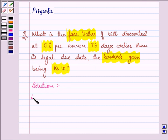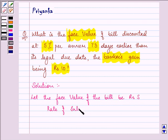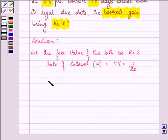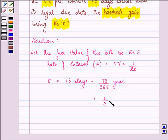Okay, so here, let the face value of the bill be rupees S. This rate of interest is given to us as 5% per annum, that is 1 by 20. And we are given the time period, that is the period of discount as 73 days. That is 73 by 365 year, which on simplifying can be written as 1 by 5 year.